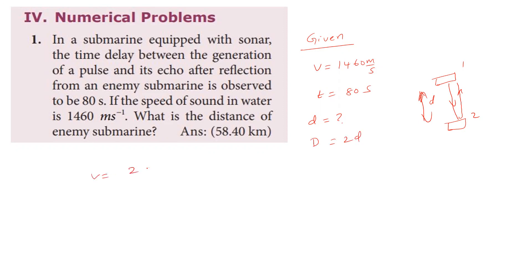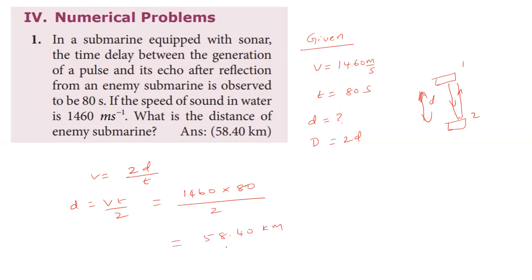The speed of sound equals total distance divided by time taken. Rearranging, D is equal to V into T divided by 2. Substituting V = 1460 m/s and T = 80 seconds, we get D = 58,400 meters, which is 58.40 kilometers. So the first question answer is 58.40 kilometers.